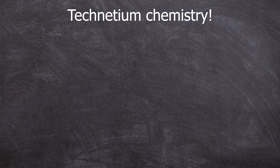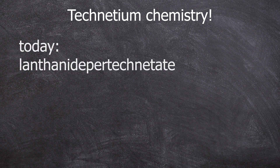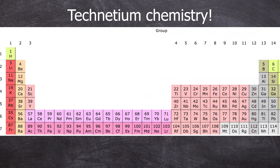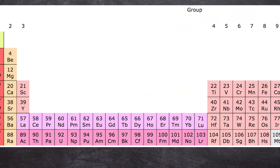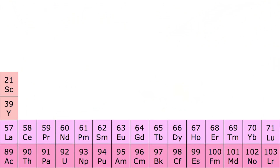The big technetium paper is finally out and today I can show you a part of our technetium chemistry. Specifically, we'll be looking at lanthanide pertechnetates. A brief overview: what, how, where, and why. Lanthanides are a collective term for the elements 57 lanthanum to 71 lutetium, excluding promethium for now, because it will get its own video.